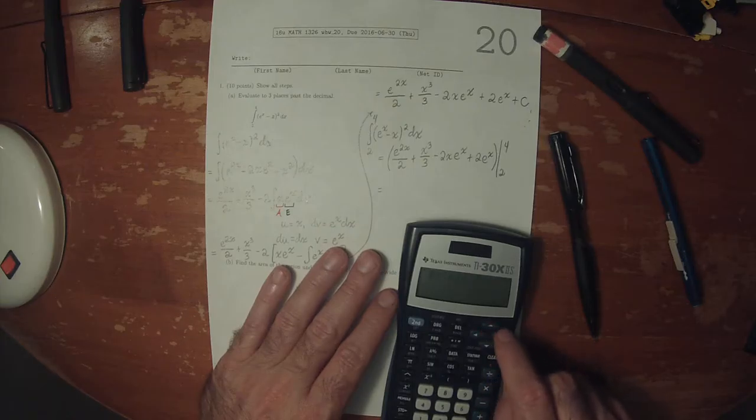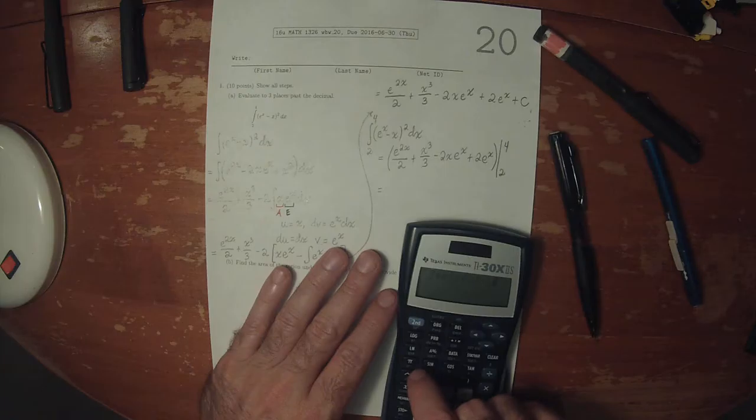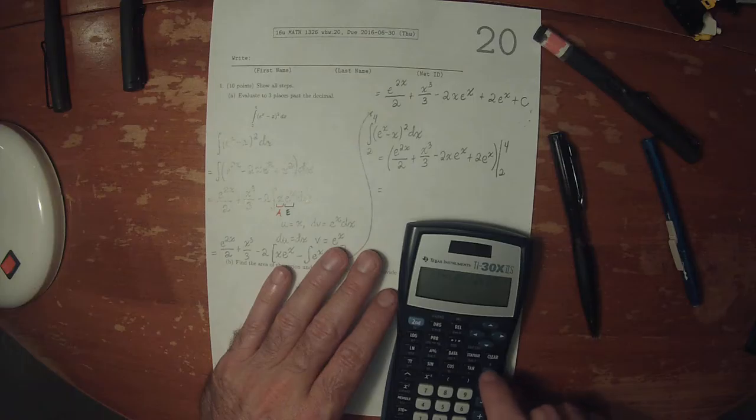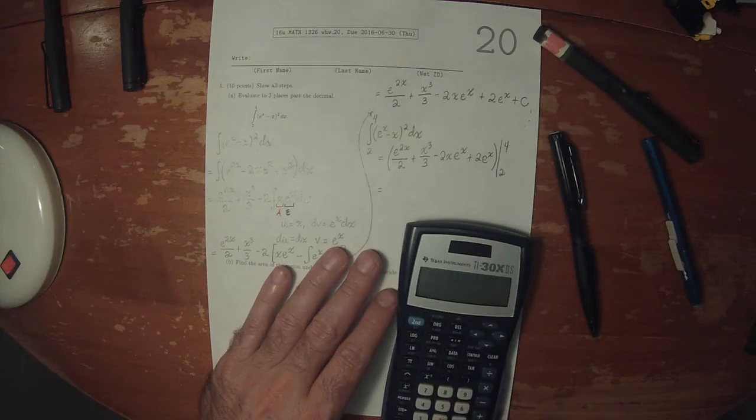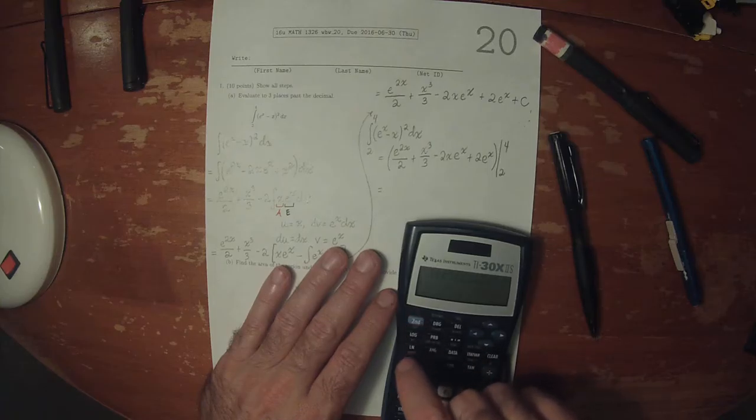So that's the first part, and then minus what we get when we plug in 2. So exponential of 2 times 2 over 2, plus 2 to 3 over 3, minus 2 times 2 times exponential of 2, plus 2 times the exponential of 2.